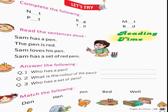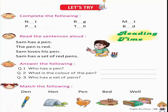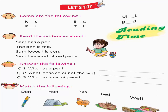Let's try — Complete the following. Reading time — Read the sentences aloud: Sam has a pen. The pen is red. Sam loves his pen. Sam has a set of red pens. Answer the following. Match the following.